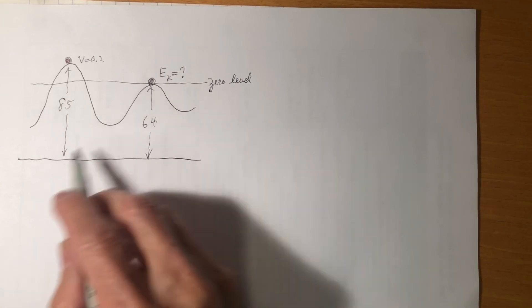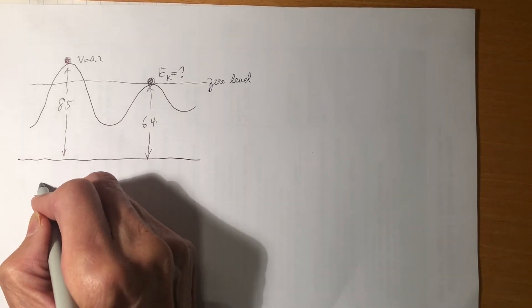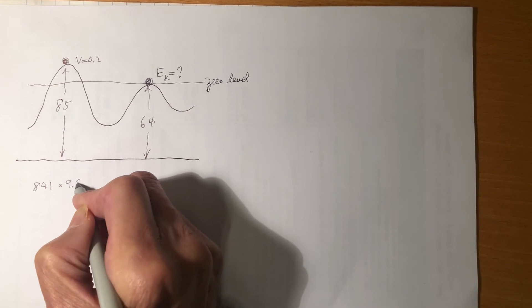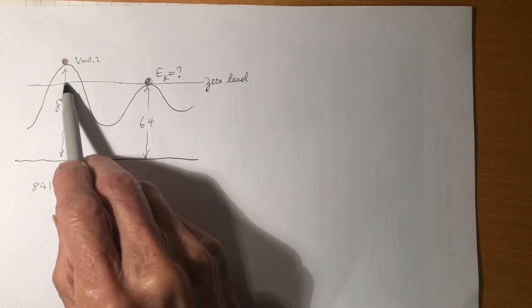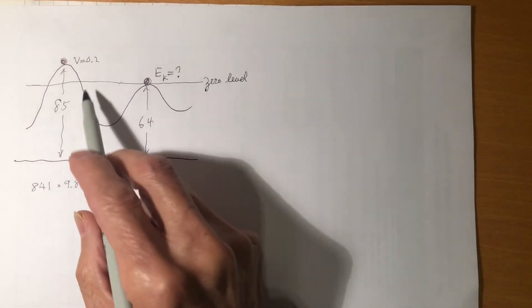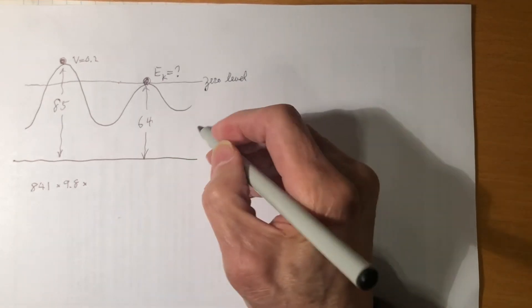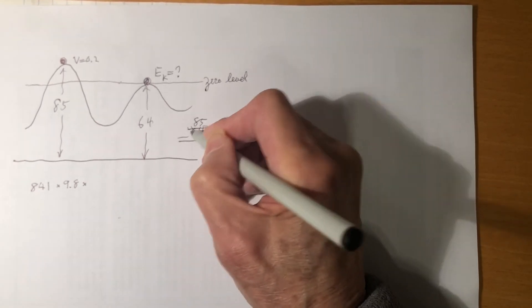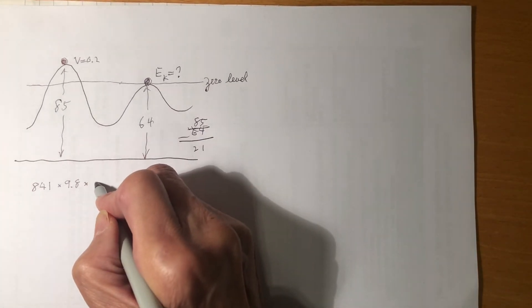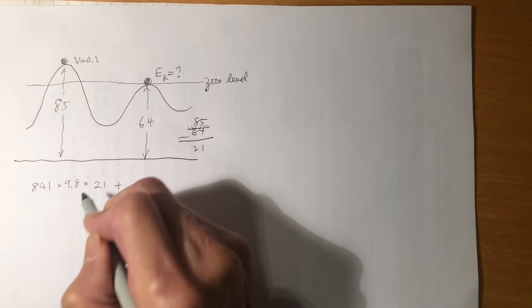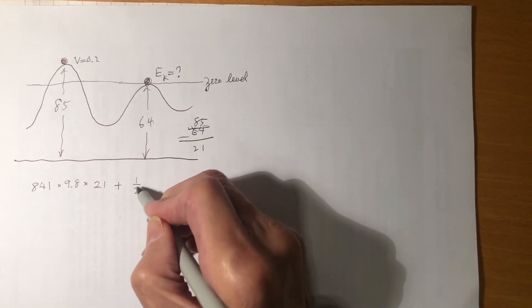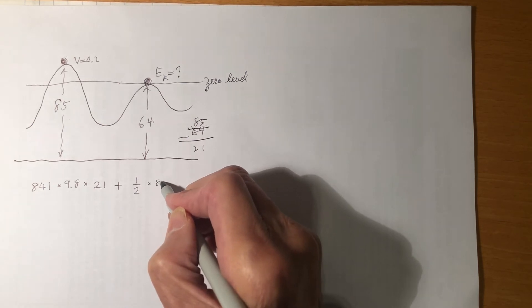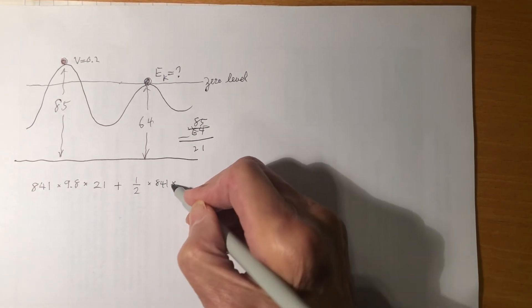The advantage of choosing the second hill's level as zero is that at position 2 the potential energy is zero, making the writing simpler. The potential energy at position 1 is MGH, where H is the height difference: 85 minus 64 equals 21 meters. So the potential energy term uses H = 21. The kinetic energy at position 1 uses one-half MV squared with V = 0.2.